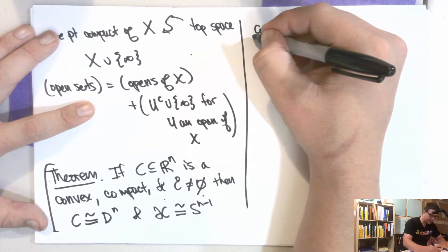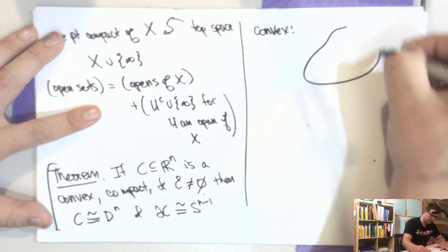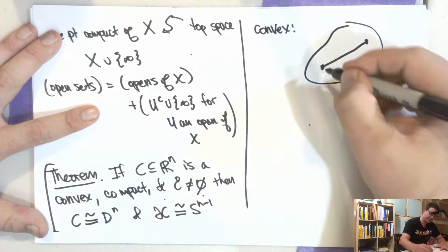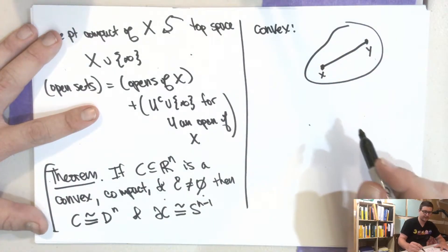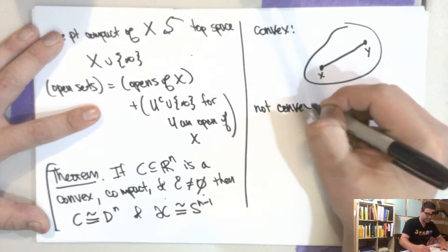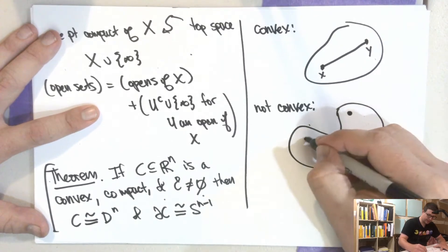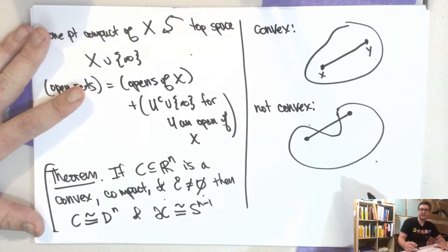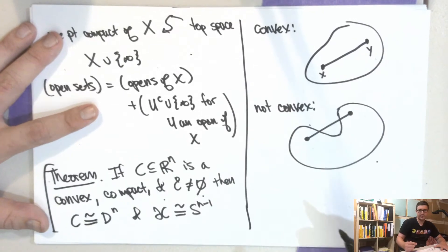So let's remind you what convex means. So convex subsets of ℝⁿ, so it has the property that any two points can be connected by a line. So for any two x and y in here, the whole line is contained inside. So what's not convex? Well, we could do something like this. So here, there's no straight line between these two. So that's something that's not convex.